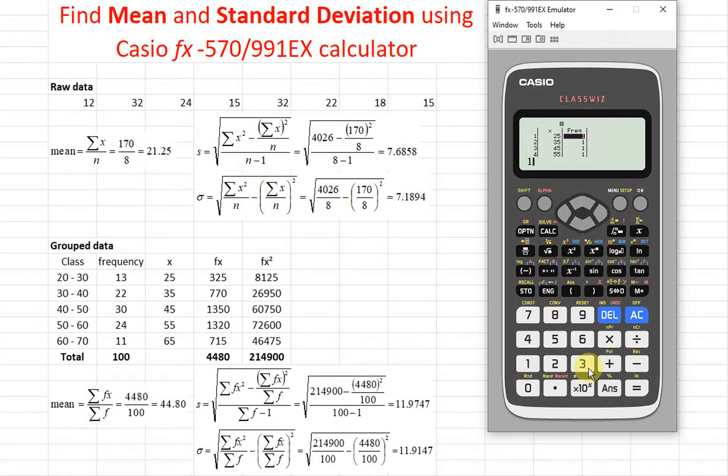So second, 22, 30, 24, and 11. So we input everything already. So escape.